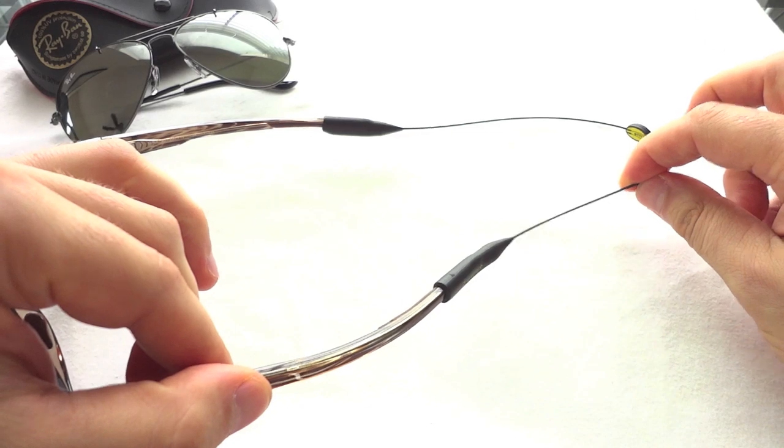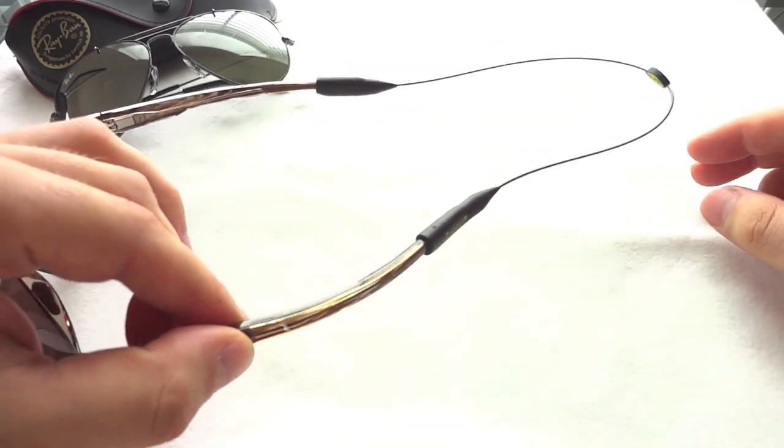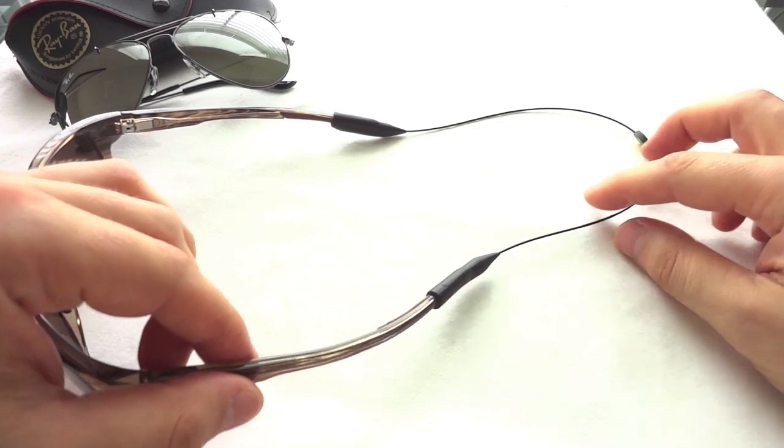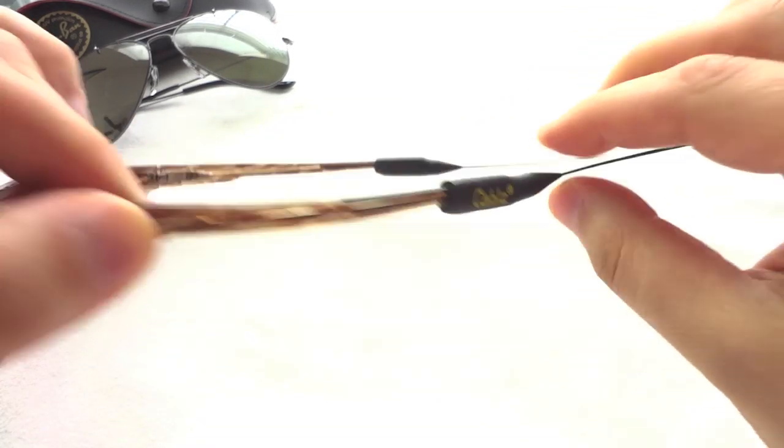As far as the Maui Jims go, I have the cables here so I don't drop them in water. You have a $250 investment, make sure you have something holding that, getting off your head, especially when you're fishing. This is very light, doesn't touch my neck.